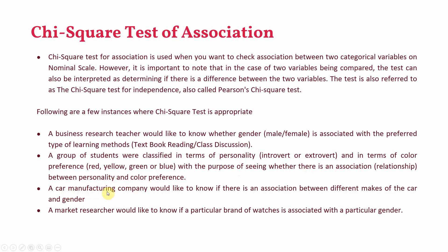A car manufacturing company would like to know if there is an association between different makes of car and gender. A market researcher would like to know if a particular brand of watches is associated with a particular gender. In each of these cases, the two variables being associated are on the nominal scale.